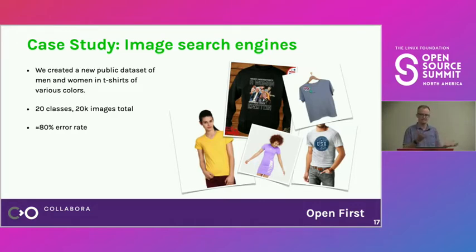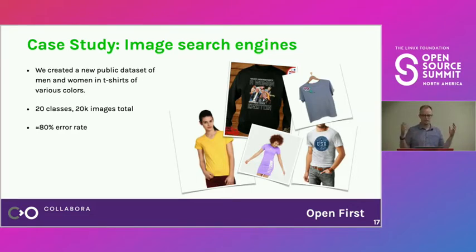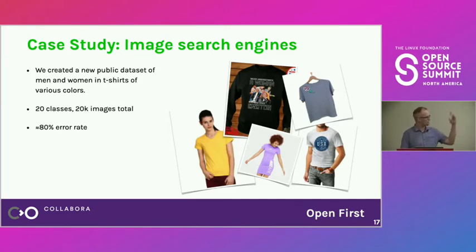Some of them are genuinely difficult cases — like whether something is really a t-shirt. But drilling down, you learn a lot more about your data than you'd expect. There's so much variation in t-shirts. You also get images with no person — just a t-shirt on a hanger — when you specifically asked for a person in a t-shirt. You get other pieces of clothing, dresses, whatever. That's where the errors come from.